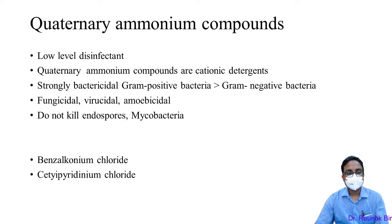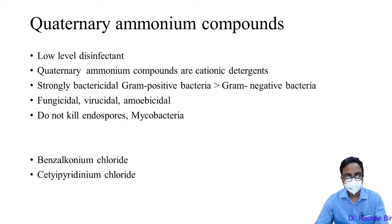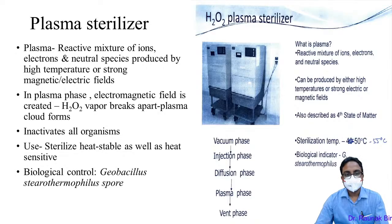The last low-level disinfectant is quaternary ammonium compounds like benzalkonium chloride. They are mostly cationic detergents with strong activity against gram-positive rather than gram-negative bacteria, and they are fungicidal, virucidal, and amoebicidal. They do not have any activity for Mycobacterium tuberculosis or spores.